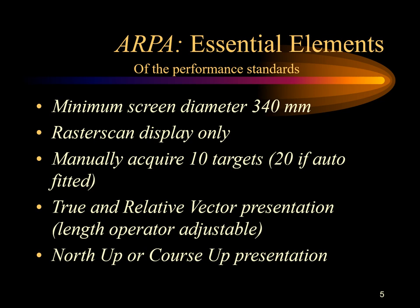Moving on to some essential elements of the performance standards: the minimum screen diameter should be about 340 millimeters with a raster scan display only. It should be able to manually acquire at least 10 targets and automatically acquire 20 targets if fitted. The presentation should have a true and relative vector option with operator-adjustable vector length. ARPA should also have a north-up or course-up presentation mode available.